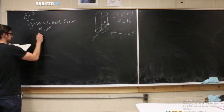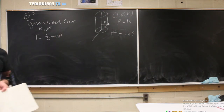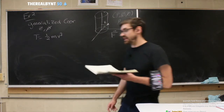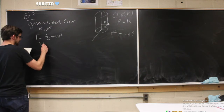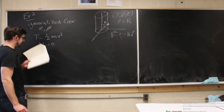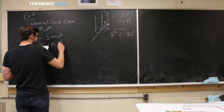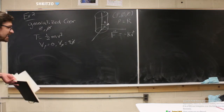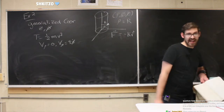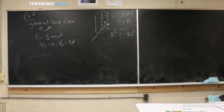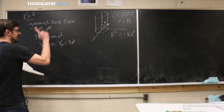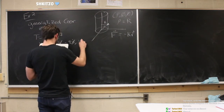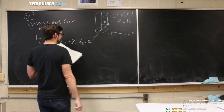Now we need the kinetic energy, which is one-half m v-squared. We need to figure out what v is. We have three velocity components: velocity in the z direction, velocity in the phi direction, and velocity in the rho direction. The velocity in the rho direction is zero — it can't be anything else because the particle is constrained to the surface. The velocity in the phi direction is R times phi-dot, the tangential velocity as it moves around the surface. The velocity in z is simply z-dot.